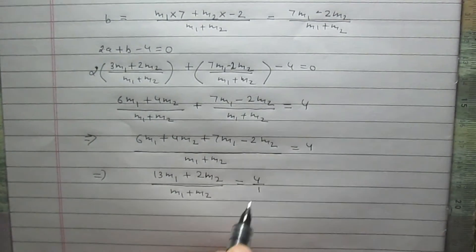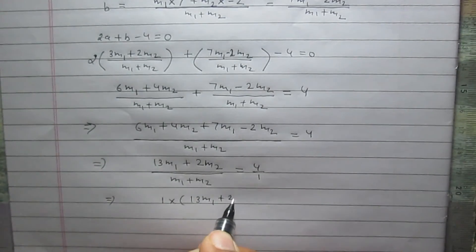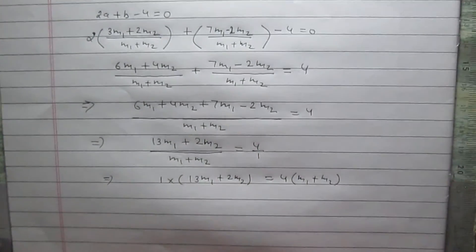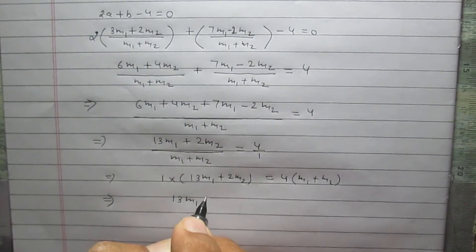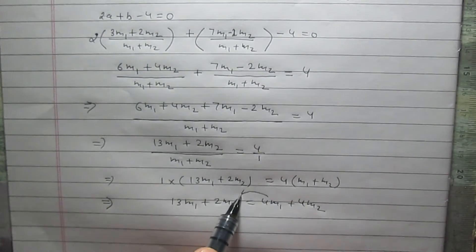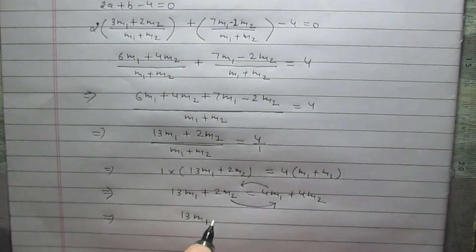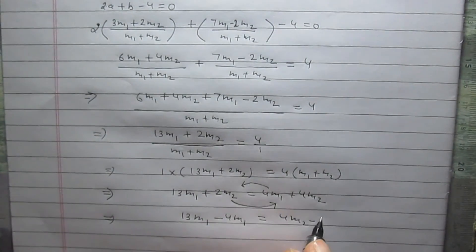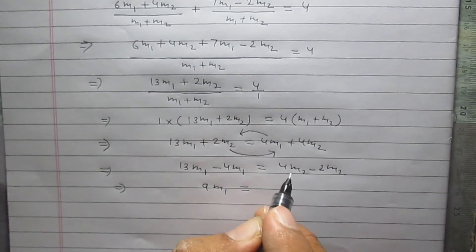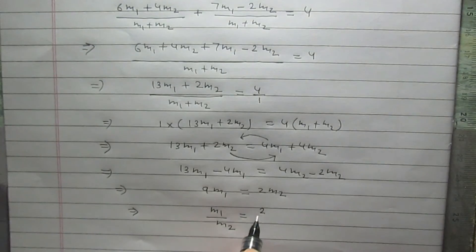Rewriting 4 as 4(M1 plus M2)/(M1 plus M2) and cross-multiplying gives 13M1 plus 2M2 equals 4M1 plus 4M2. Transferring 4M1 to the left and 2M2 to the right gives 9M1 equals 2M2. Therefore, M1 upon M2 equals 2 upon 9, so the ratio M1 to M2 is 2 to 9.